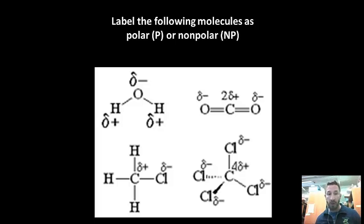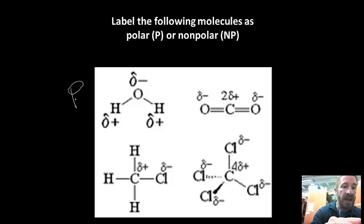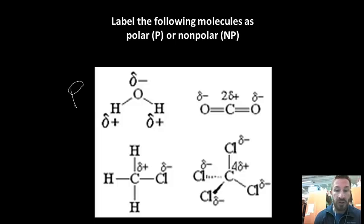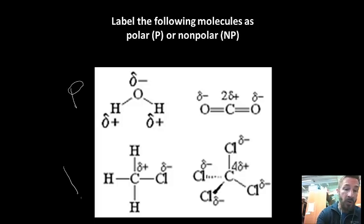Looking at the final examples with partial charges already drawn in: water — notice that if you look at it in one direction the charges may seem to cancel, but remember water is a bent structure, and because of that bent structure the partial positives and negatives can't cancel, so water is a polar molecule. CH3Cl: the chlorine has a different electronegativity than the carbon-hydrogen bonds, the chlorine side is more electronegative and the hydrogen side is more electropositive, so this is a polar molecule as well.